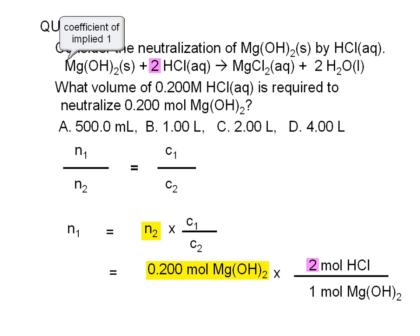The ratio of coefficients serves as a conversion factor. Carrying out the indicated calculations, we find that 0.400 moles of HCl would be needed to neutralize 0.200 moles of magnesium hydroxide.